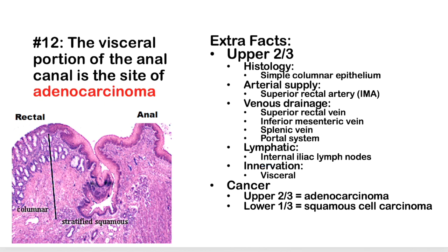Fact 12: The visceral portion of the anal canal is a site of adenocarcinoma. The upper two-thirds has simple columnar histology, arterial supply from the superior rectal artery (from the IMA), and venous drainage through the superior rectal vein back to the inferior mesenteric vein, then the splenic vein, then the portal system. In portal hypertension this blood backs up, causing anorectal varices. Lymphatics drain to the internal iliac lymph nodes, and innervation is visceral.